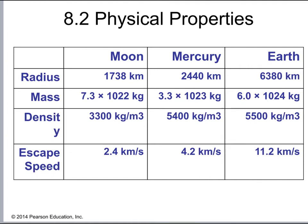When we look at density: 3,300 kg/m³ for the Moon, 5,400 kg/m³ for Mercury, and 5,500 kg/m³ for the Earth. Mercury and the Earth have about the same density, but the Moon's density is much lower. Keep that in mind — the Moon has a significantly lower density than Mercury or the Earth, which will be important later.